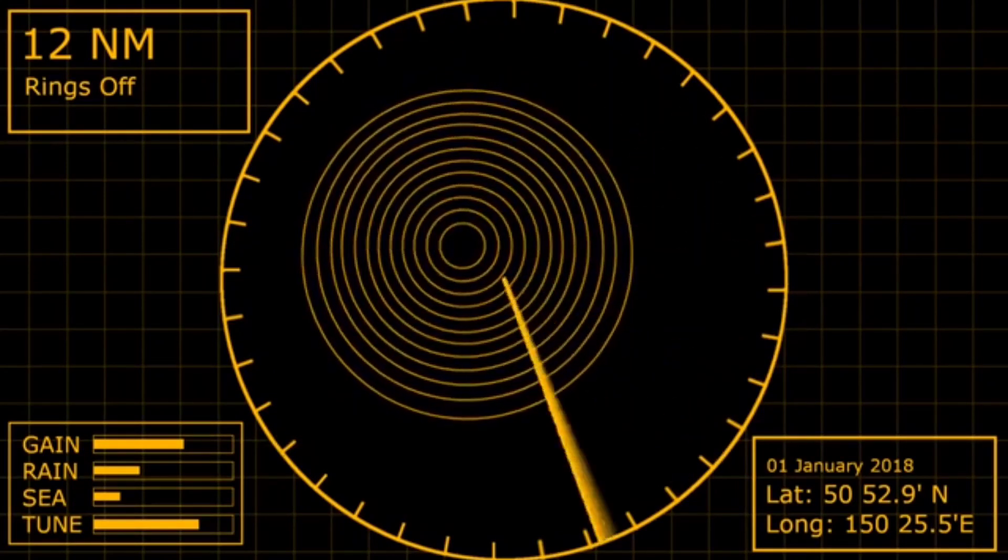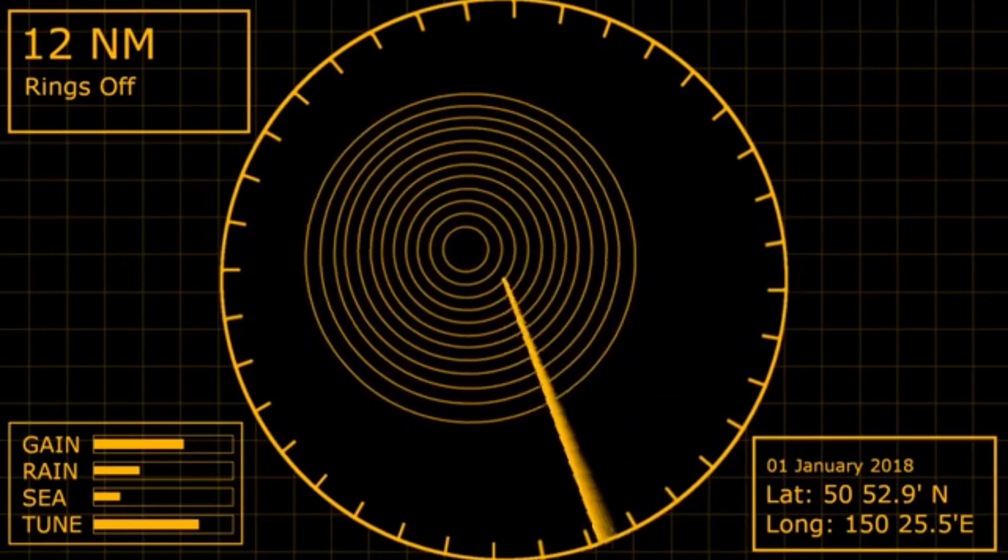Eventually, the arcs become full circles, showing that the approaching vessel is now very close to the SART's location.